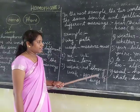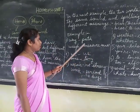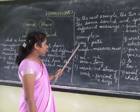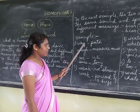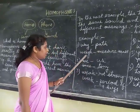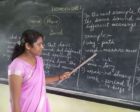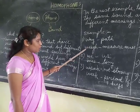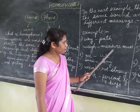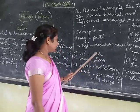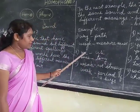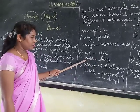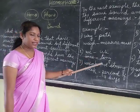Students, I have prepared some examples for you for homophones. W-A-Y, way, means path. W-E-I-G-H, weigh — this is also pronounced as 'way' and means to measure mass. W-E, we, means us. W-E-E, wee, means tiny.